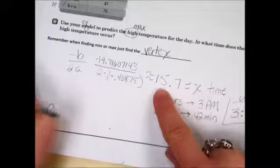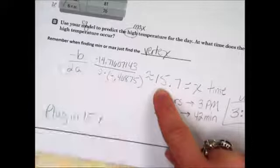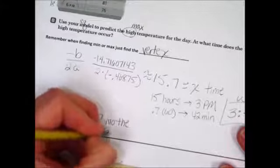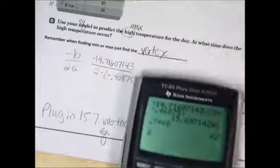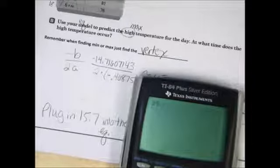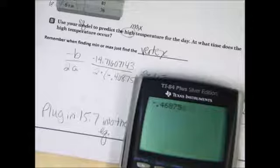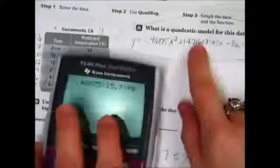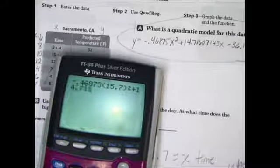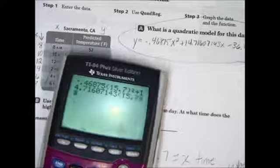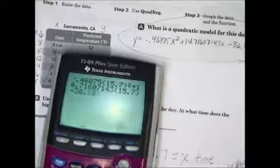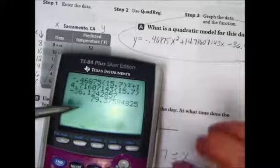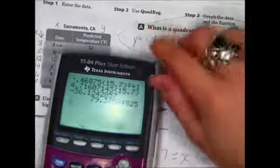Now the question is, what will it be? To figure out what the high will be, we plug in 15.7 into our equation. I'm not going to write that all down because it would be crazy. So here we go. Negative 0.46875 times 15.7, just plugging stuff in and that is squared. I'm using my equation right here. Plus 14.71607143 times 15.7, just plug in. Minus 36.12142857. So the max temperature using our predicted value will be approximately 79.4 degrees.